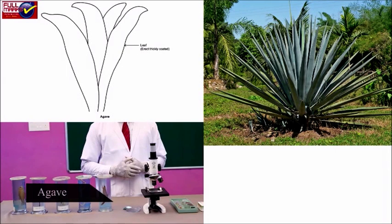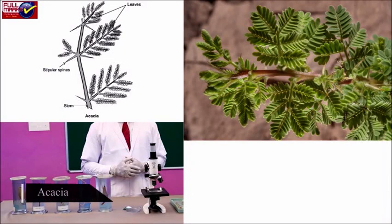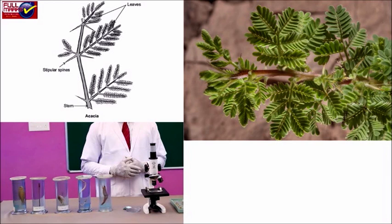Agave has a reduced stem with vertical and erect leaves along with marginal spines. Leaves contain a thick waxy cuticle and sunken stomata to prevent water loss. Acacia has a petiole modified into a flattened blade called a phyllode, and a hard, woody stem. Plants found in xeric conditions have been identified and studied.